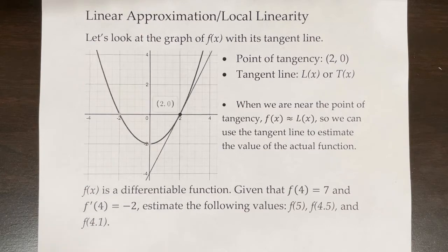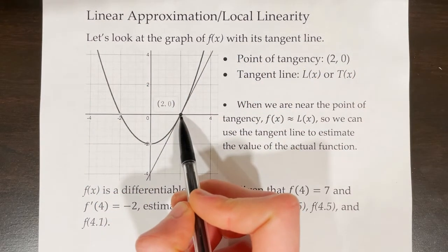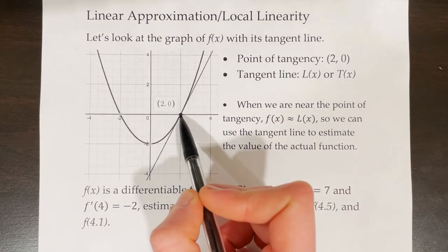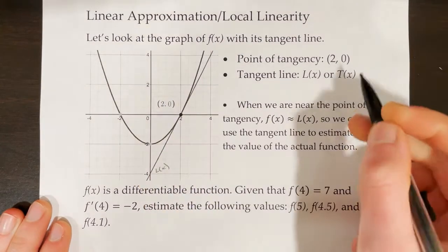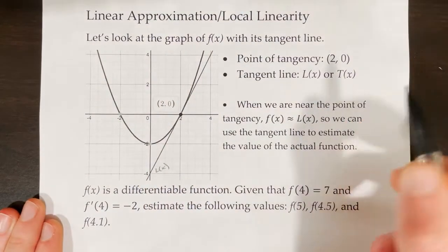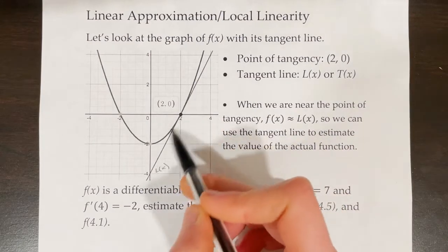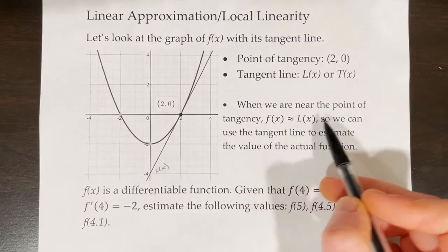In this video, we will discuss the process of linear approximation, also known as local linearity. Let's look at a graph of f of x — this parabola — with its tangent line at x equals 2. The point of tangency is (2, 0). The tangent line we can label as L of x or T of x. When we are near that point of tangency, near the point (2, 0), f of x is approximately equal to L of x.